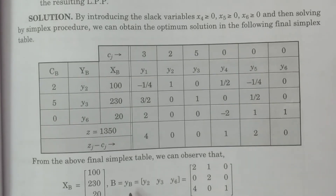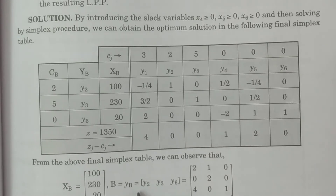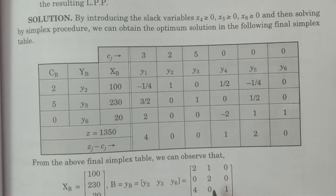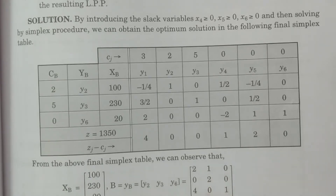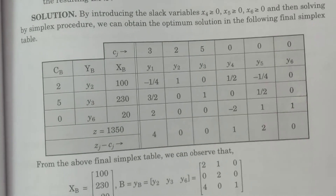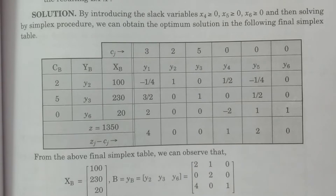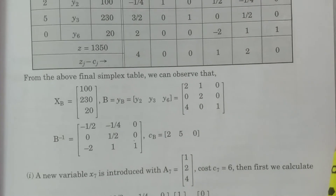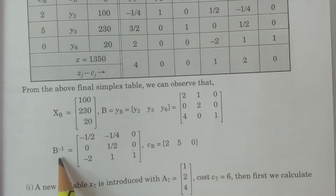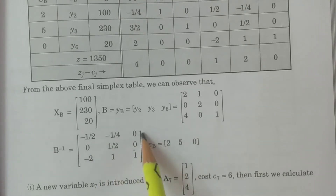We identify the basis variables y2, y3, y6 in the basis. The basis matrix B has values 2, 0, 4, 1, 2, 0, 0, 0, 1 from the original constraints. B inverse is the matrix: [−1/2, 0, −2; −1/4, 1/2, 1; 0, 0, 1].